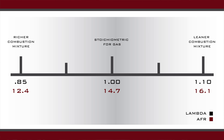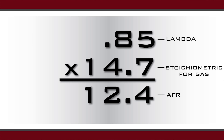The way this relates to AFR is: if 1.00 is the reading on an engine running gasoline, the AFR ratio would equate to 14.7 to 1. So if you had a lambda number of 0.85, you can take that number and multiply it by 14.7, and the result would be 12.4 AFR for gasoline.